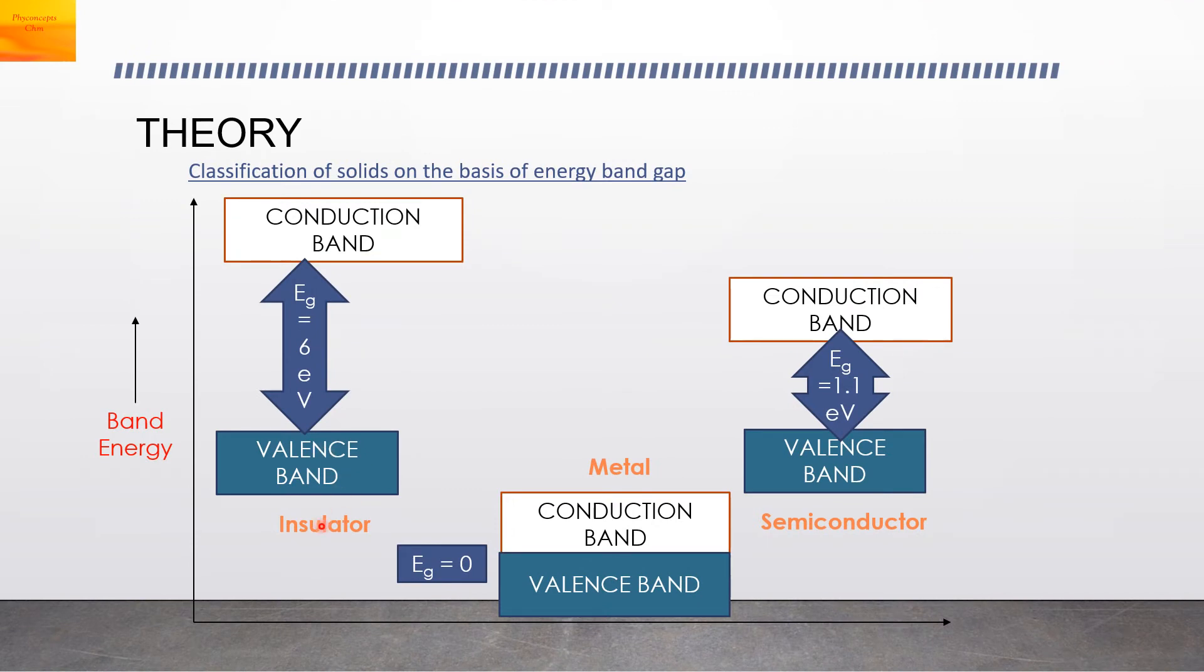First is the insulator which has a very large band gap. Second is the metal where the valence band and conduction band overlap and hence the band gap energy is zero. Third is the semiconductor whose band gap energy lies in between that of the metal and the insulator.